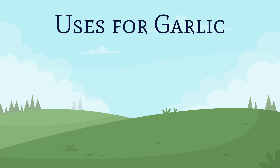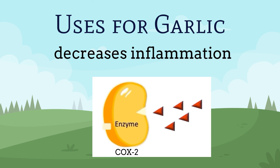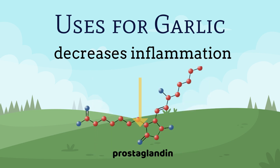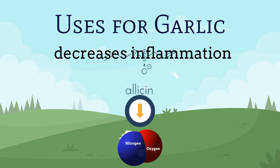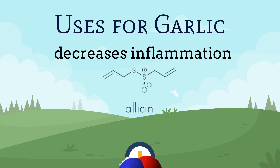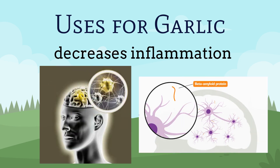Garlic is also well-known to decrease inflammation in the body. It does this by using its constituent allicin to inhibit the COX-2 inflammation cycle. This decreases prostaglandins that control pain and inflammation. Allicin also decreases nitric oxide, which is a pro-inflammatory mediator that causes vascular dilation and bursting of cells.